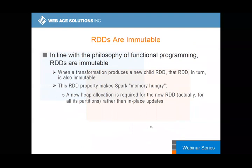RDDs are immutable. When you apply transformations, nothing gets mutated. The state of an RDD — the changes you are applying — transformations are not happening on the RDD itself. This is very much in line with functional programming philosophy, where you don't mutate state. Be it recursion or something else.